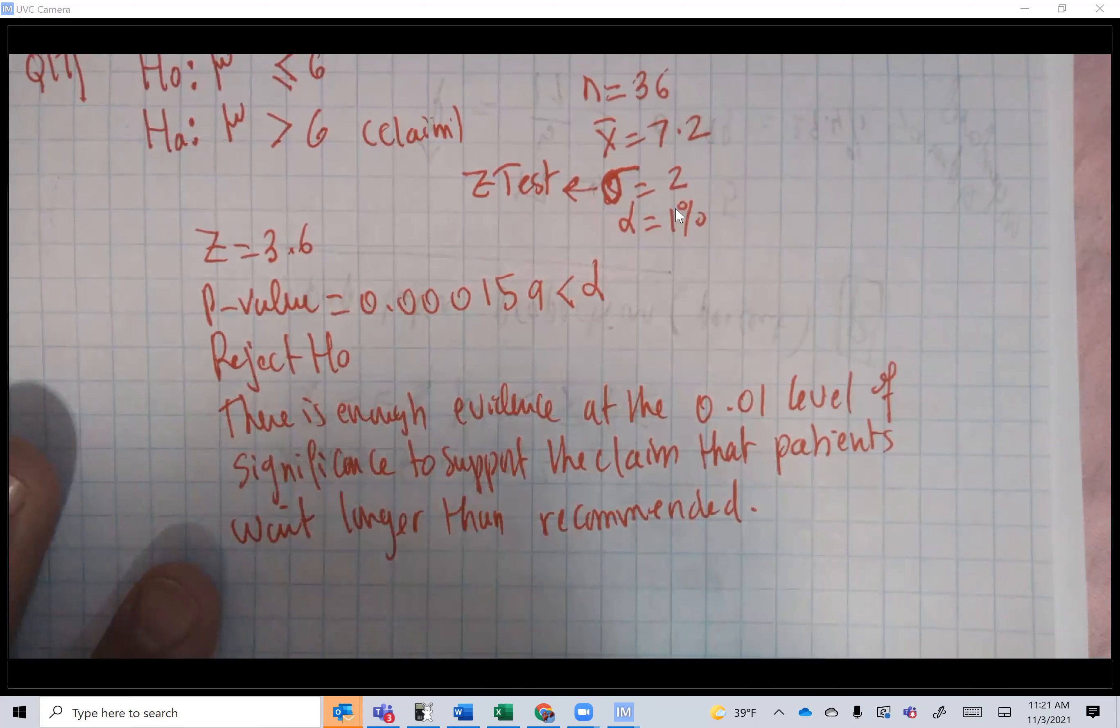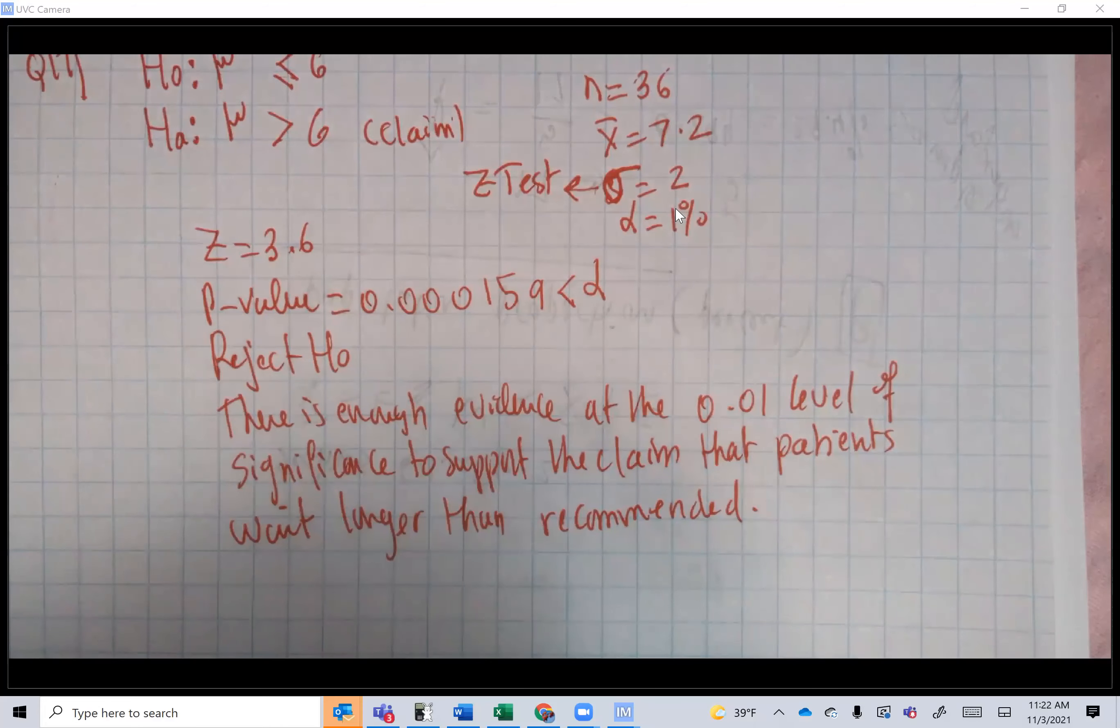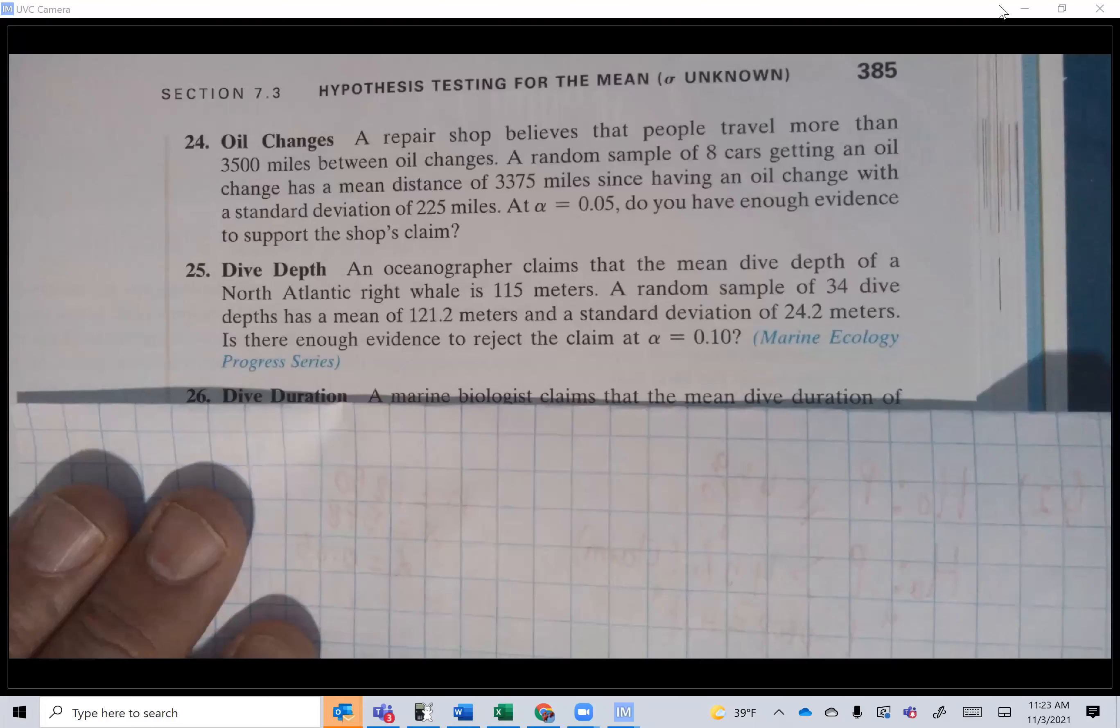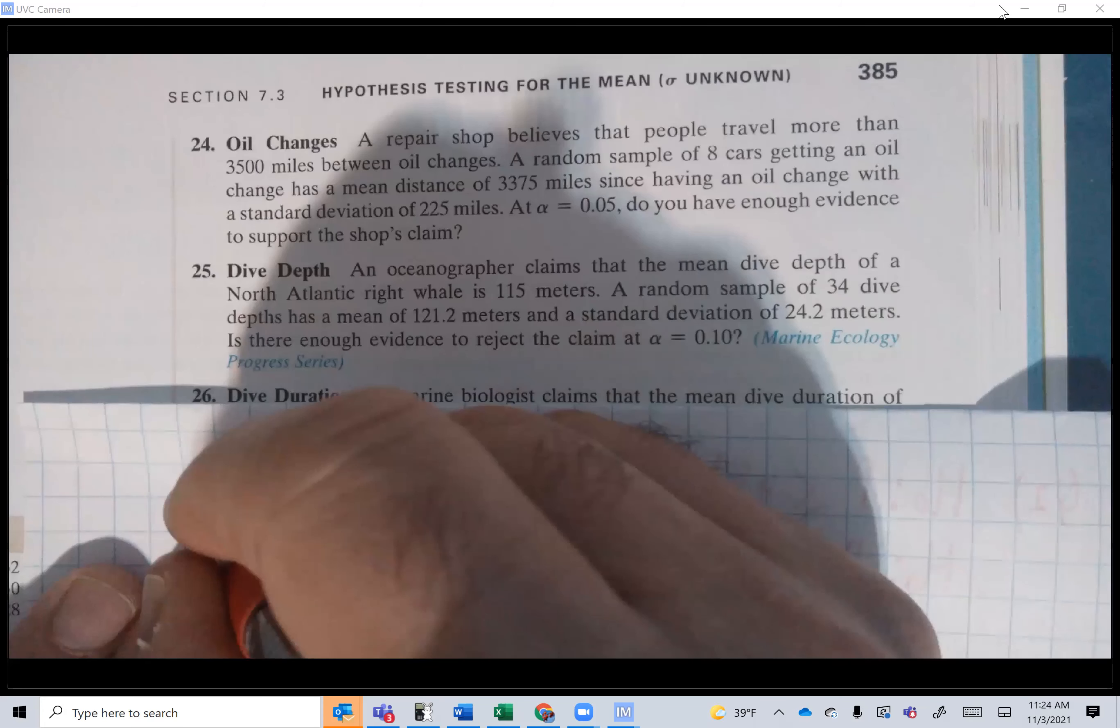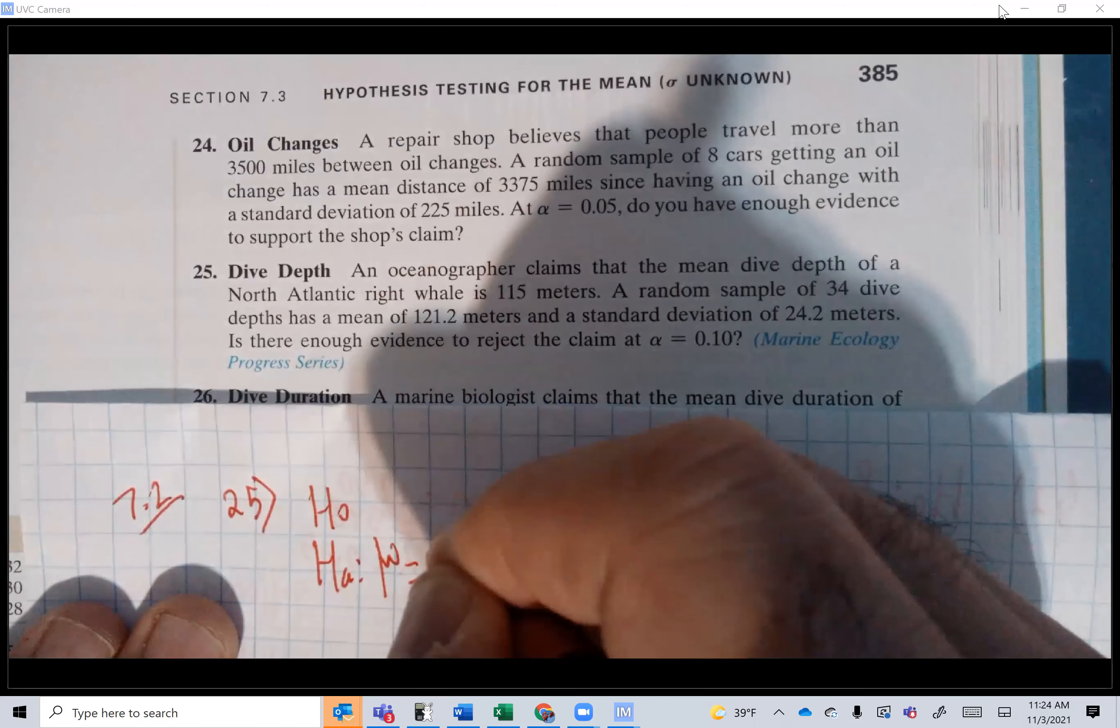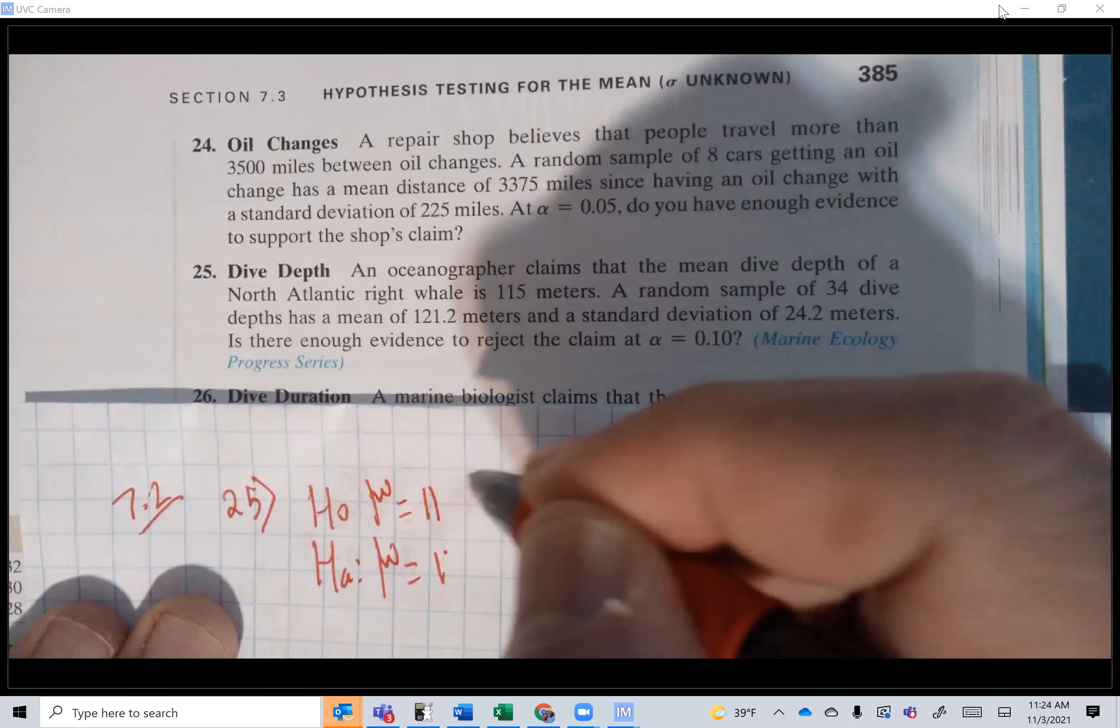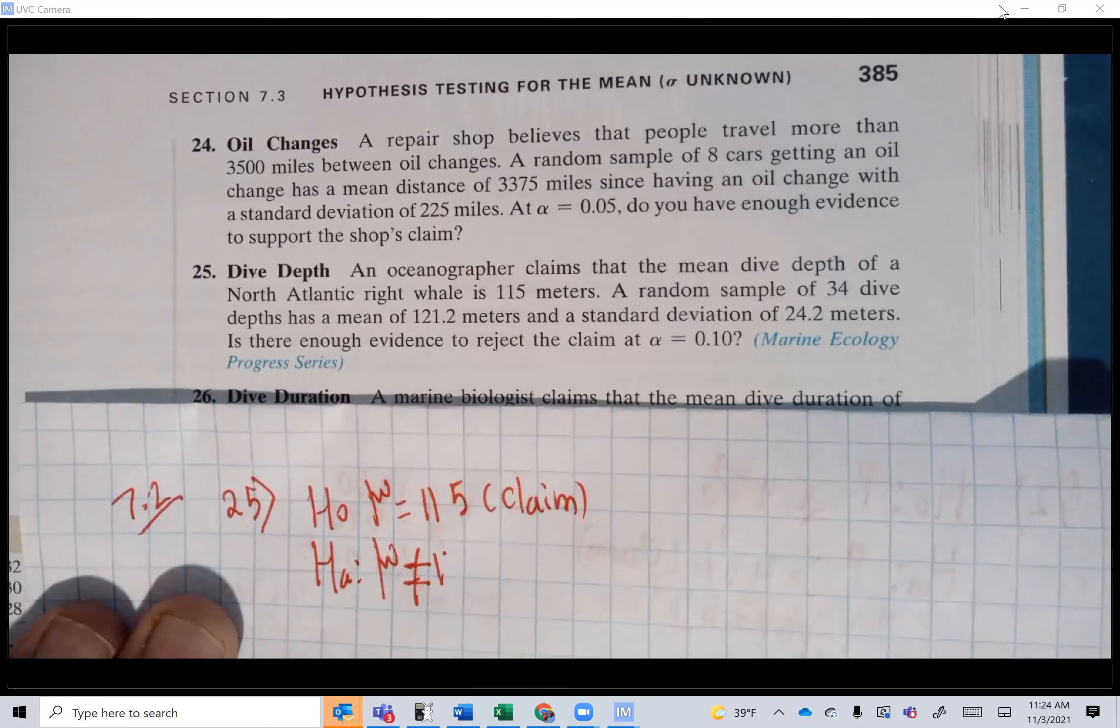Before I do the activity, I want to do one more last exercise where the claim turns out to be in the null, because now you're making an impression that all the claims are always in the alternative. But no, there are cases where the claim will happen to be in the null. An oceanographer claims that the mean dive depth of a North Atlantic right whale is 115 meters. 'Is' means equal sign. Section 7.2. H0: μ = 115. And you guys agree that this is the claim. This time, you know what the sign is going to be here: not equal, because equal and not equal are always together.